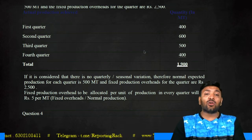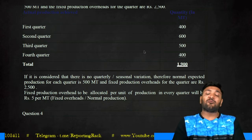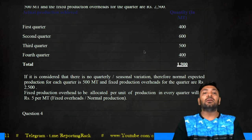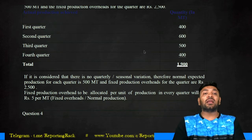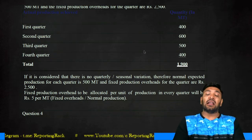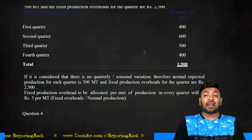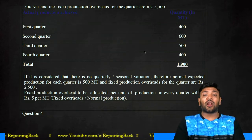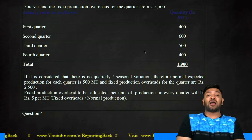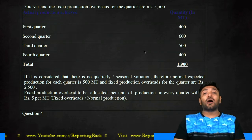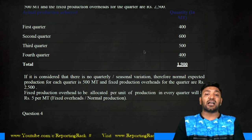We always measure at 5 rupees per metric ton. Therefore: Q1 = 2,000; Q2 = 3,000; Q3 = 2,500; Q4 = 2,000. For Q1, 100 metric tons lower than normal production — 100 × 5 = 500 rupees is under-absorbed overheads. Such under-absorbed overheads should be charged to P&L.